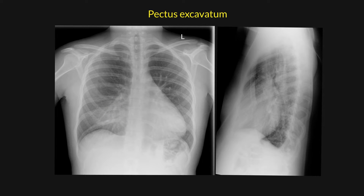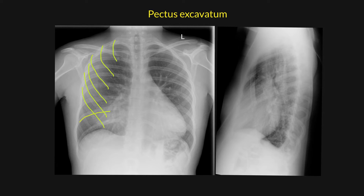One thing you should also note is that the anterior ribs tend to be more obliquely orientated than in normal chest radiographs, and as a consequence of this, the posterior ribs tend to be a little bit more horizontal.